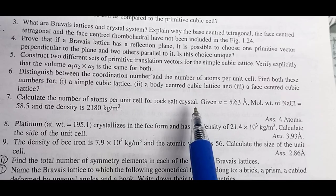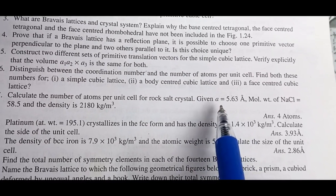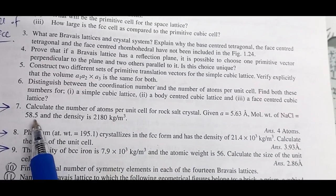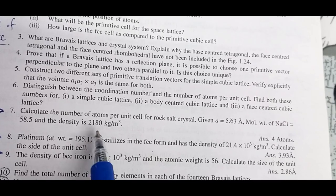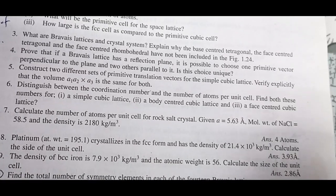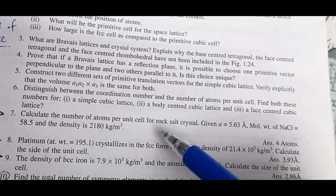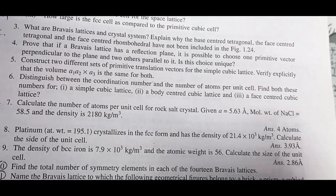Given: a equals 5.63 angstrom is the lattice parameter, molecular weight of NaCl is 58.5, and the density is given to be 2180 kg per meter cube. Given that information, we have to find the number of atoms per unit cell, which is very easy to find. Let's quickly get into the solution.